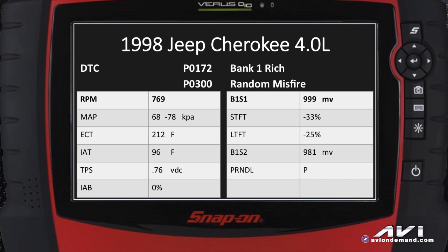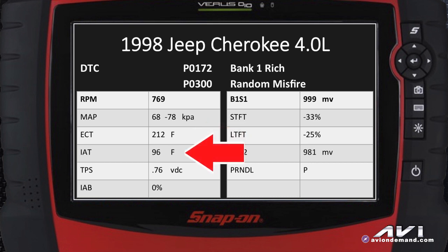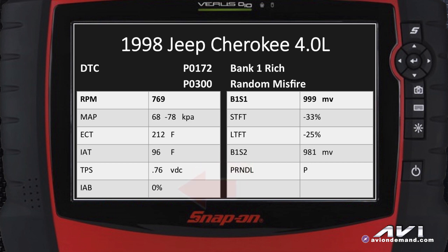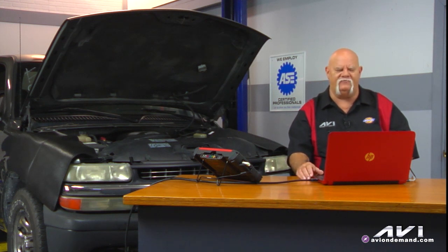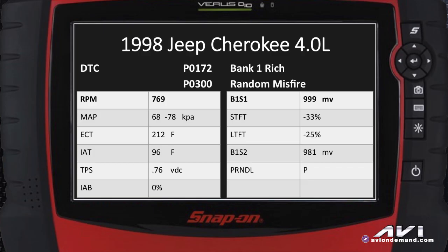It would be the same thing if you took a simple vacuum gauge and connected it to the manifold and the needle was dancing back and forth — you already know right away that you're going to find some sort of a valve train problem. Moving on in the scan data, we had an engine coolant temperature of 212, an intake air temperature of 96 degrees, closed throttle TPS below 1 volt at 0.76. The idle air bypass motor was all the way in at zero, indicating most of the time there's some sort of vacuum leak.